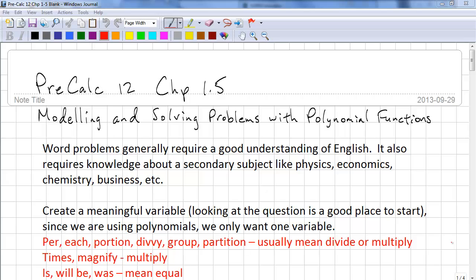Word problems generally require a good understanding of English and require knowledge about a secondary subject like physics, economics, chemistry, business, etc. You want to create a meaningful variable and look to the question for this. And since we are using polynomials, we only want one variable.